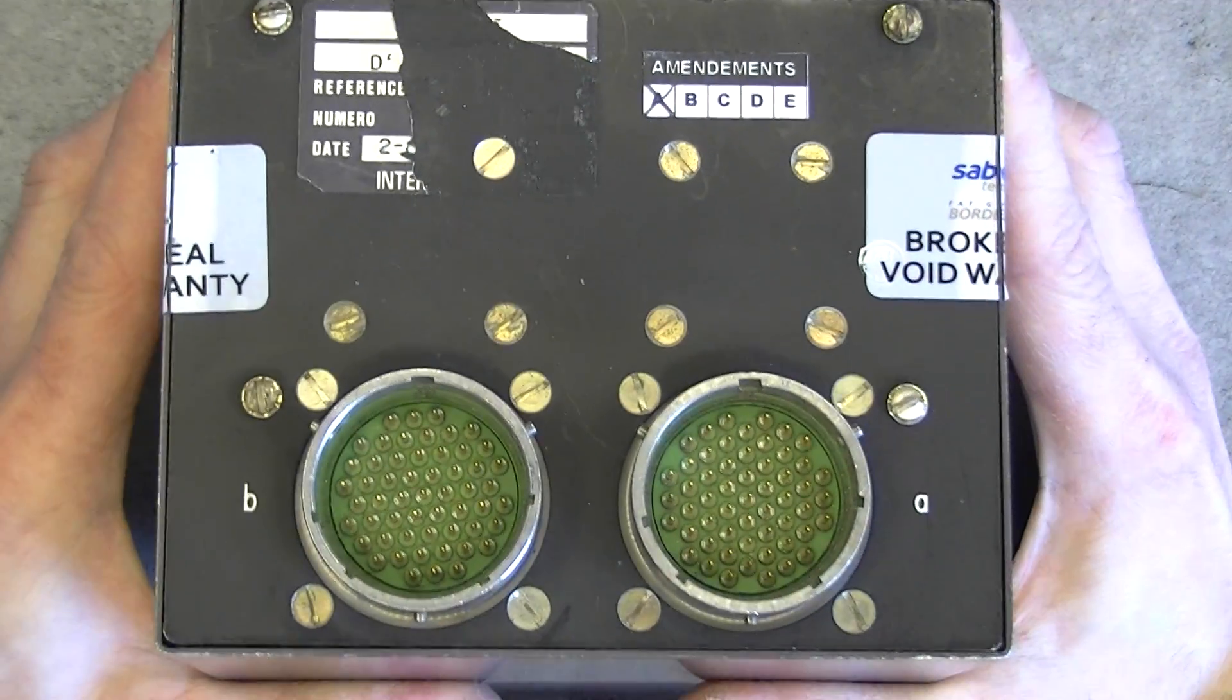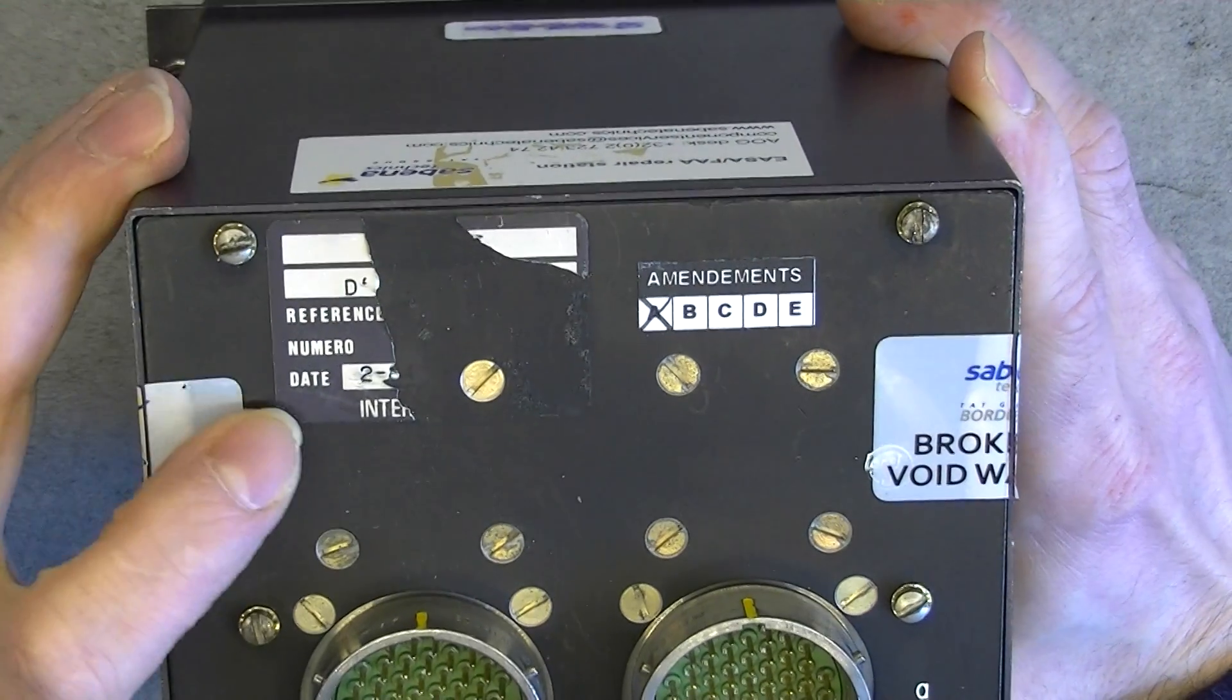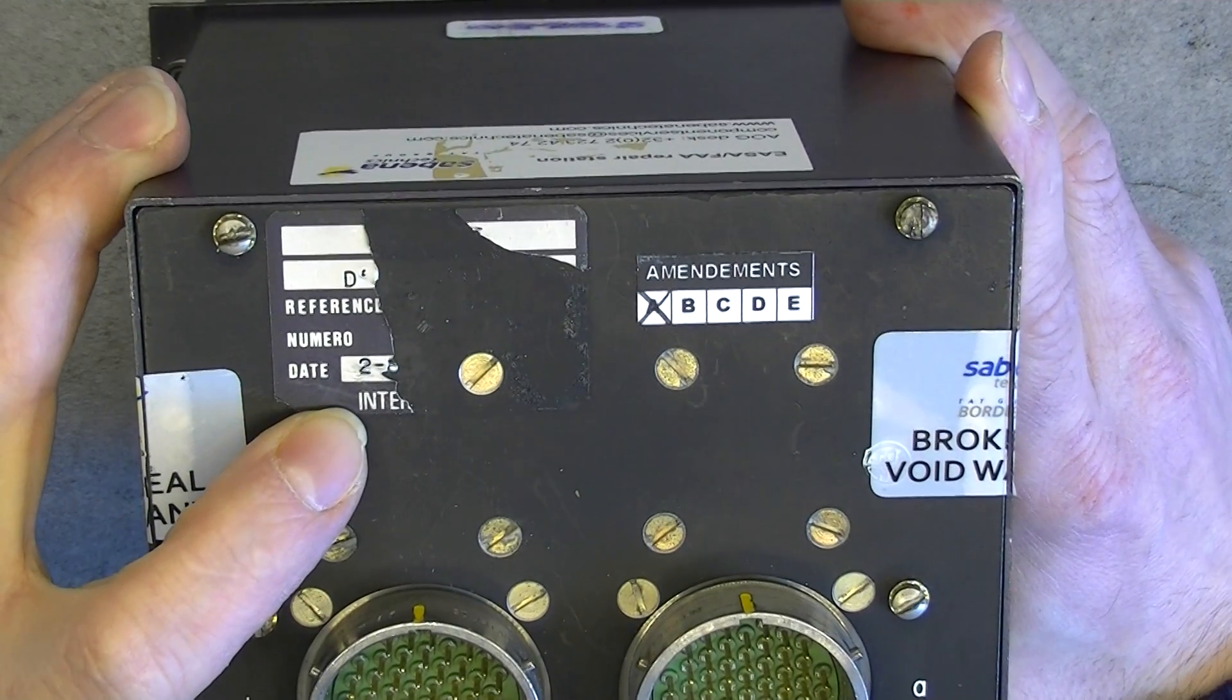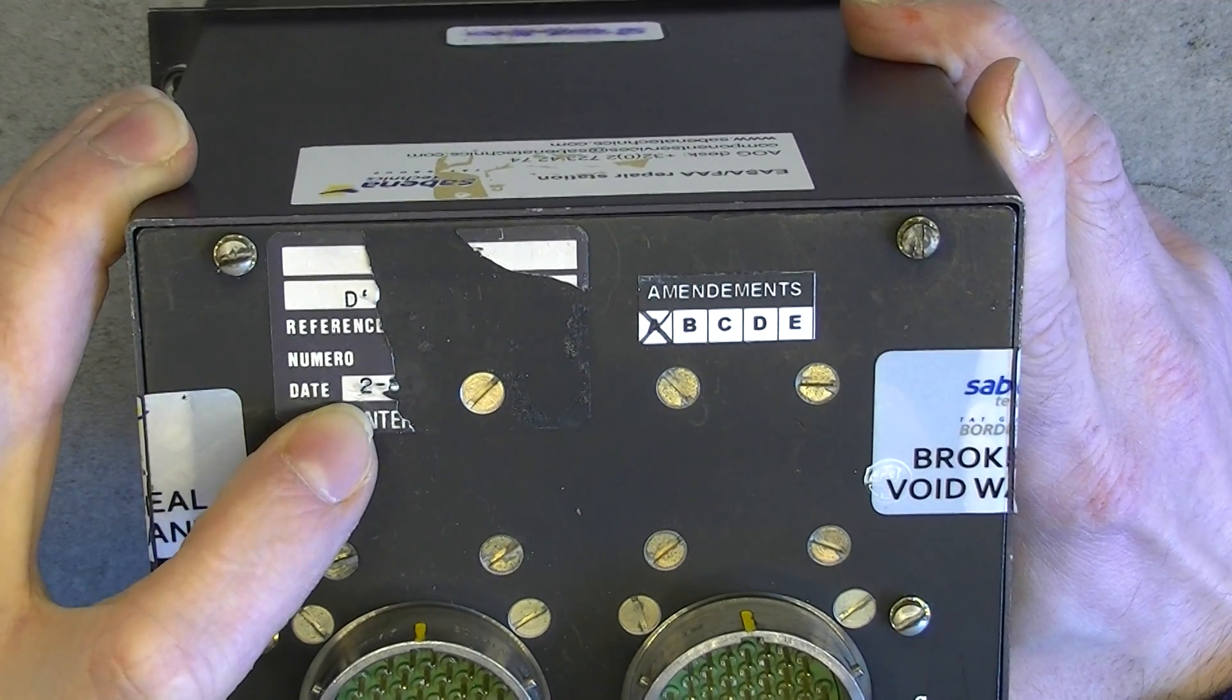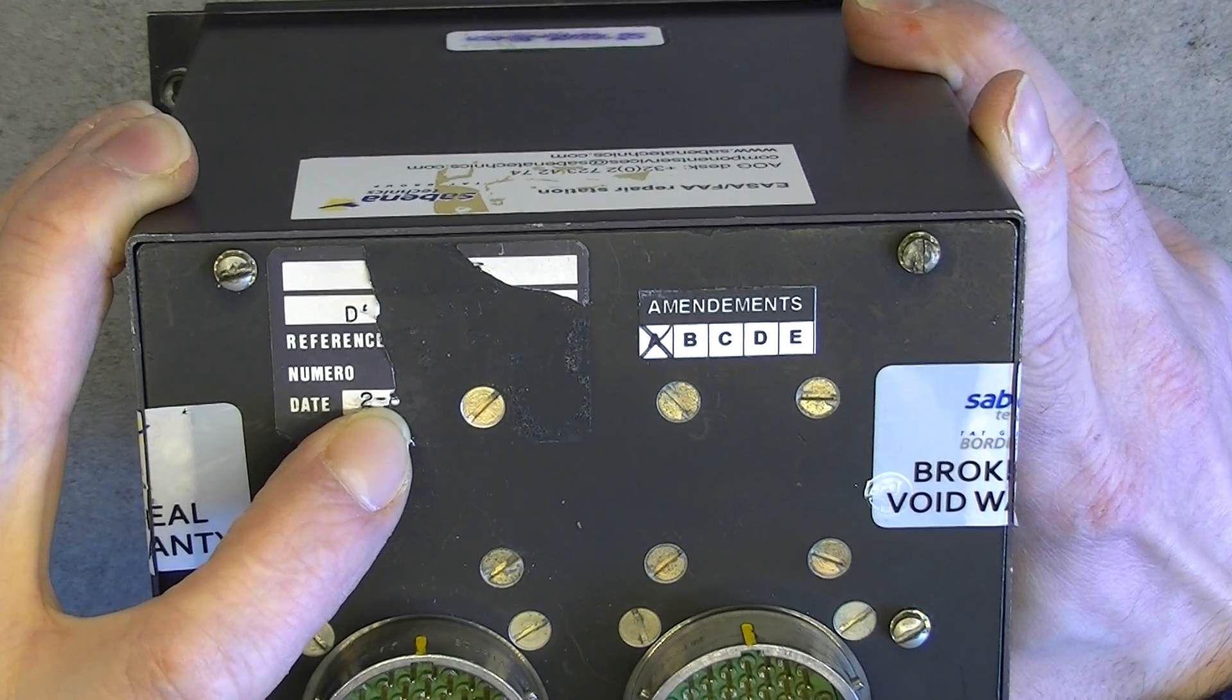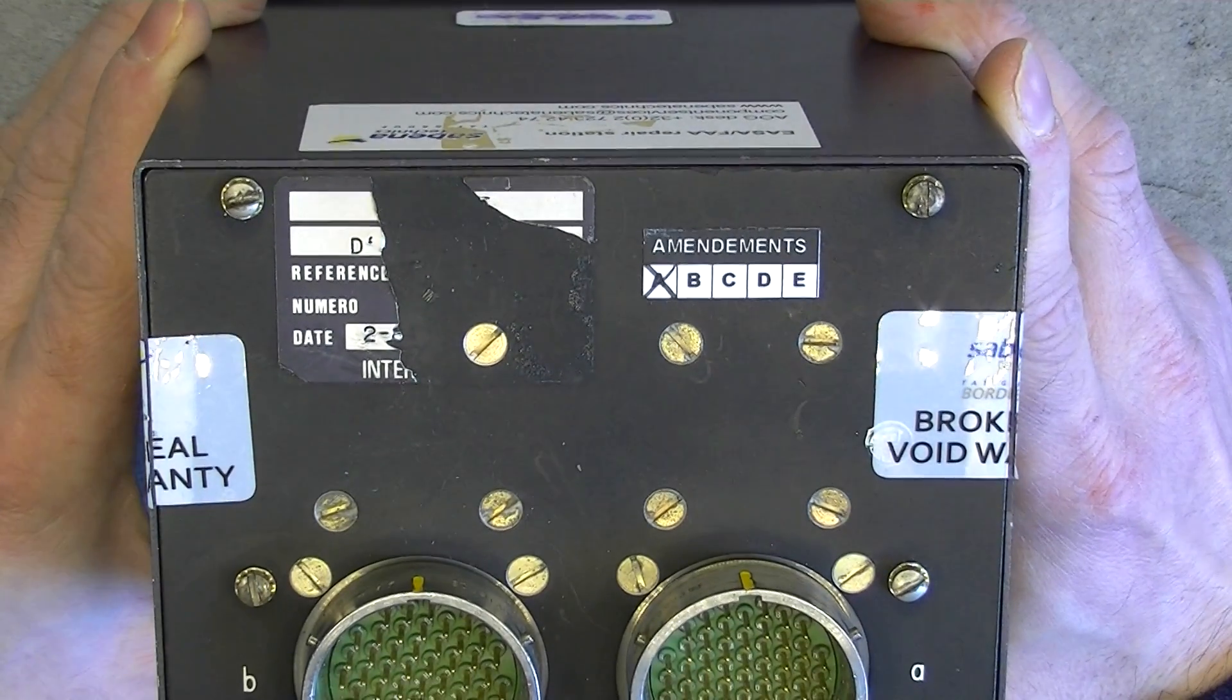On the rear, we have two big connectors and we have a destroyed manufacturer sticker. Here it is written Intertechnic. We have a date of February and what seems to be a number 8, and nothing left about the model number and serial number.